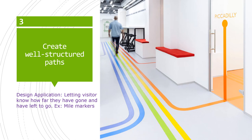Principle three: create well-structured paths. Paths should maintain a navigator's orientation with respect to both the next landmark along the path and the distance to the eventual destination. This picture of an office building shows literal stripes on the floor as pathways — the orange one takes you to the conference room. The design application can be as simple as telling the visitor how far it is to their destination so they can measure their progress and confirm they're on the right path, like mile markers on a highway.